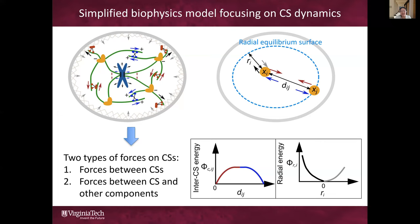For the interaction between the centrosome and other components, we assume they can be represented by a radial energy profile depending on the radial position of the centrosome in the cell. This energy is minimized at a hypothetical radial equilibrium surface, shown as the blue dashed line. This energy profile recapitulates the fact that centrosomes are typically located beneath the cell cortex due to the hard boundary, but also outside the chromosome mass due to steric repulsions and other forces. We have constructed these two simplified energy profiles to phenomenologically capture the overall effect of mechanical forces on a centrosome.